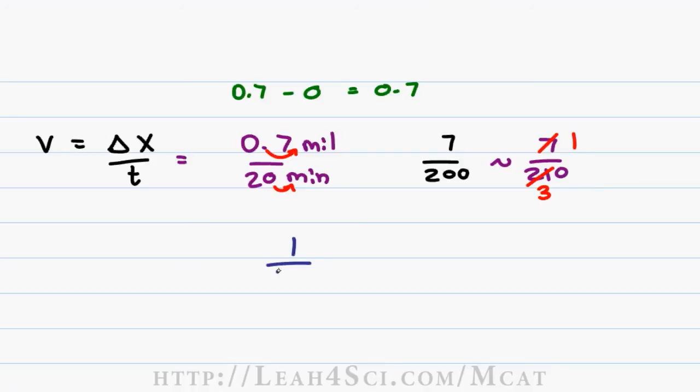We can estimate this further. 1 over 30 equals 1 over 3 times 1 over 10. You should be familiar with the decimal values of common fractions. 1 over 3 is 0.33. 0.33 times 1 over 10, or simply divided by 10, move the decimal back one space, and that equals 0.033 miles per minute.